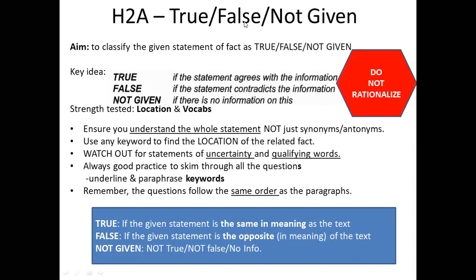Someone is asking in the chat whether True/False/Not Given questions are arranged in order. Yes, True/False/Not Given questions are arranged in order. So you don't have to waste time reading the entire passage. Once you find one, you just use that location to find the other ones.